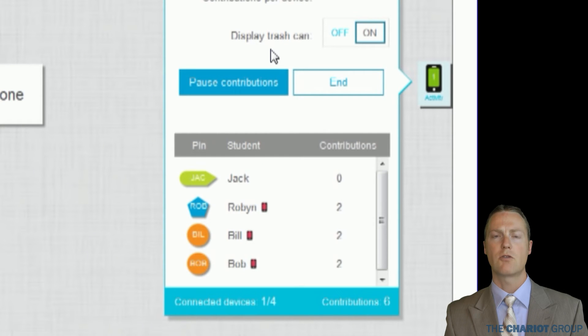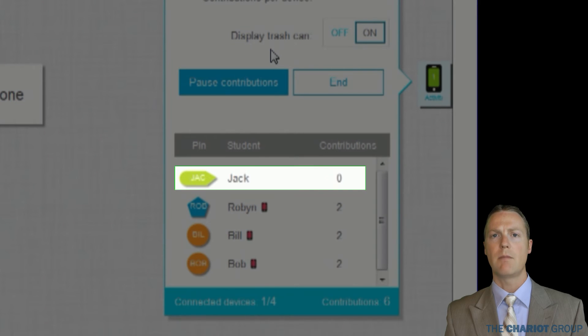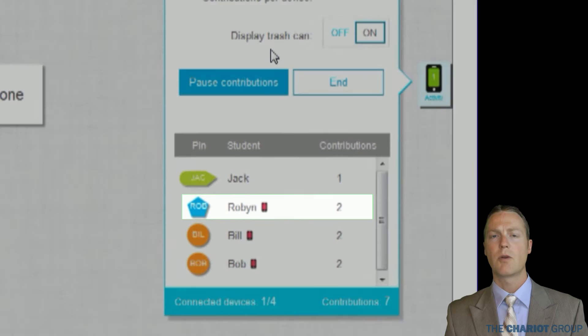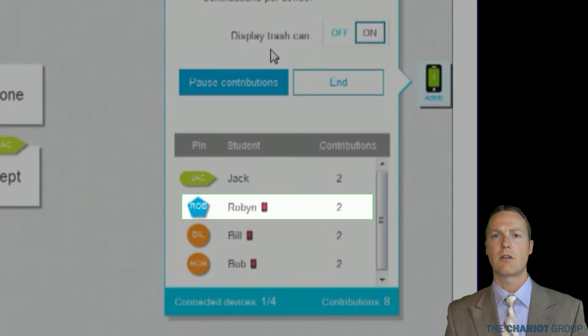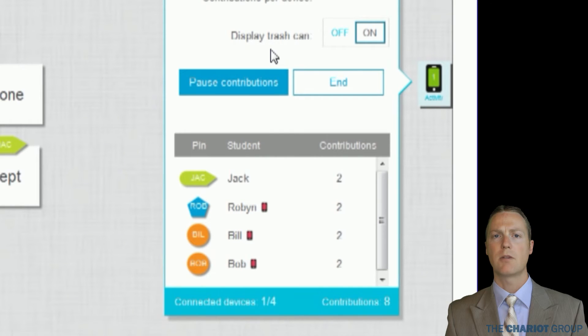On the bottom of the activity control panel is the student list. This will show every student's name, their pin, and how many messages they have contributed. Students with a red device next to their name means they are no longer connected to the activity, either because they logged out, closed the activity, or their device got turned off. On the right, it will tell you the number of contributions by that student.